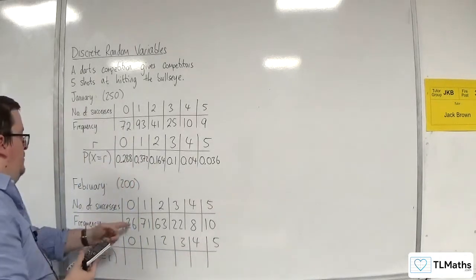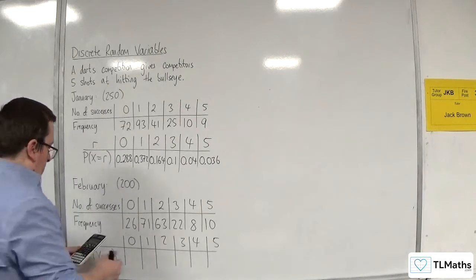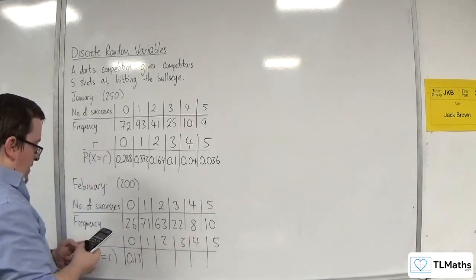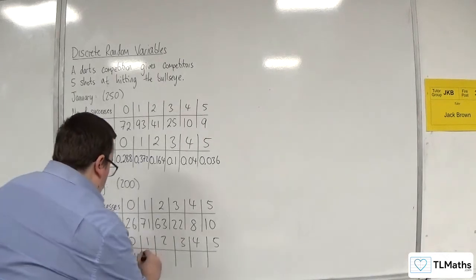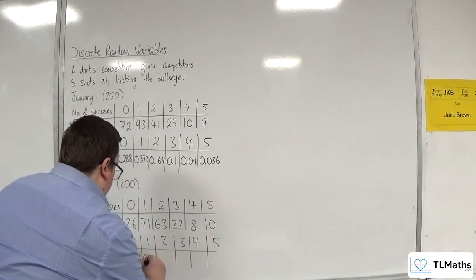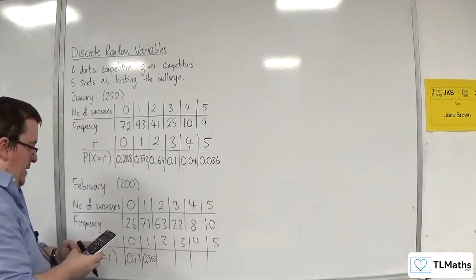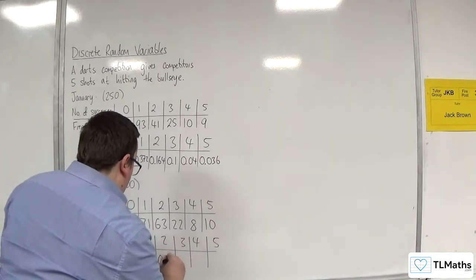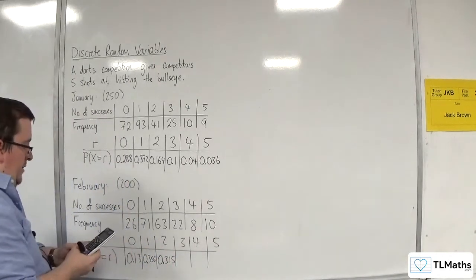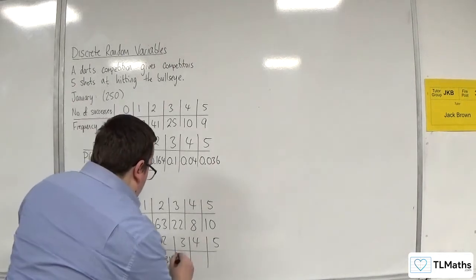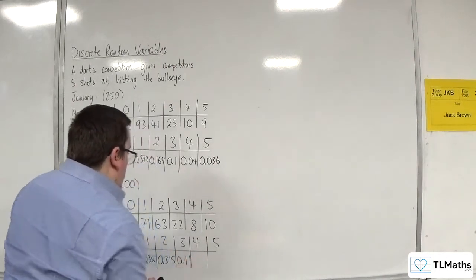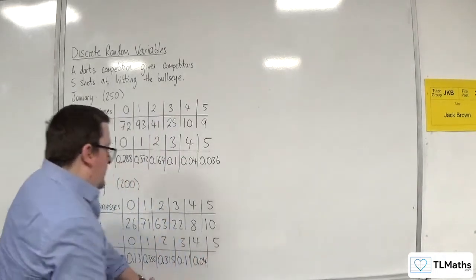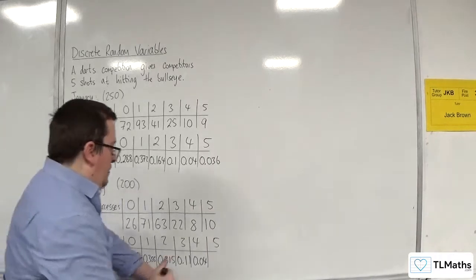This time, I'm dividing each of them by 200. So 0.13. 71 divided by 200 is 0.355. Then 63 divided by 200 is 0.315. 22 divided by 200 is 0.11. Then 8 divided by 200 will be 0.04. And 10 divided by 200 will be 0.05.